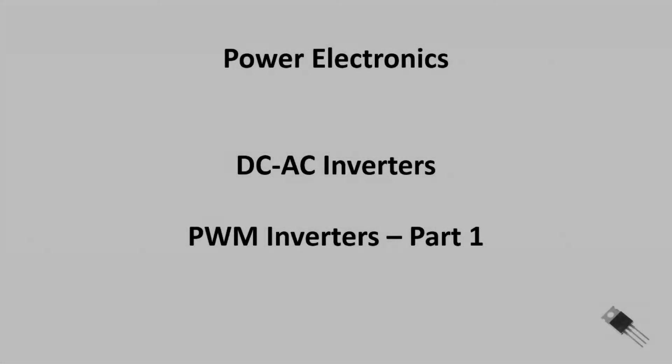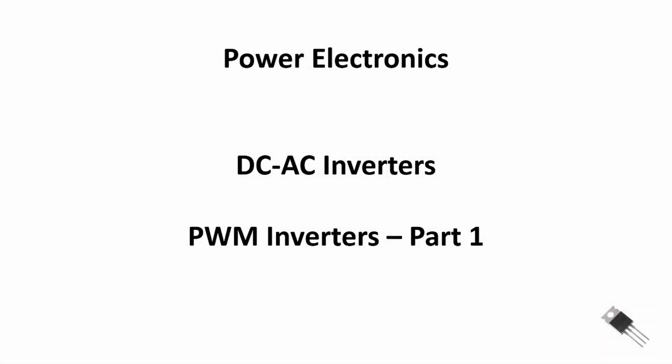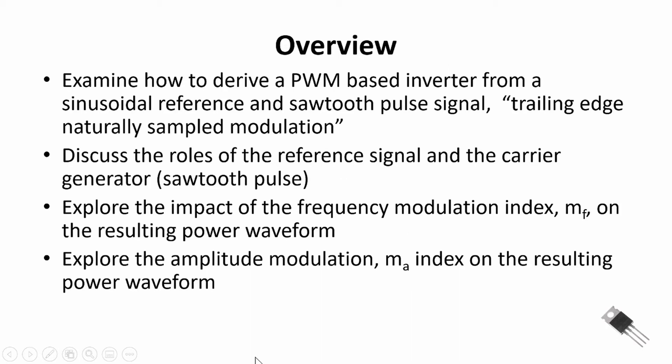Hello and welcome back to Power Electronics as we continue with our DC to AC inverters. This is part one of a two-part video sequence. For an overview: we're going to examine how to derive a PWM-based inverter using a sinusoidal reference signal and a sawtooth pulse signal. The form of PWM we'll discuss and analyze is called trailing edge naturally sampled modulation.